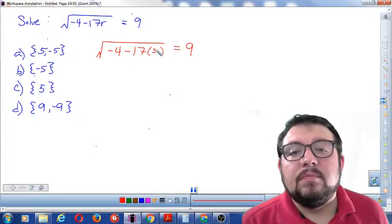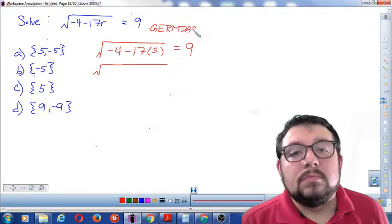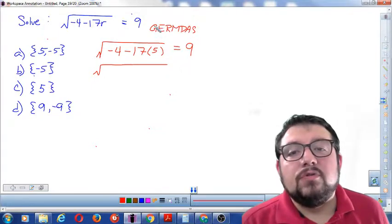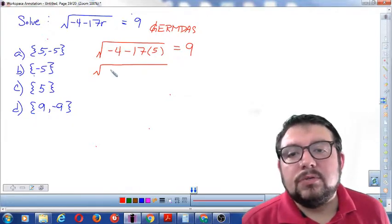Alright, so let's try positive 5. What I'm going to do is get the square root and underneath the square root we're going to follow the pattern GEMDAS. The G stands for grouping and this is a group underneath the square root. So let's do it as a grouping.